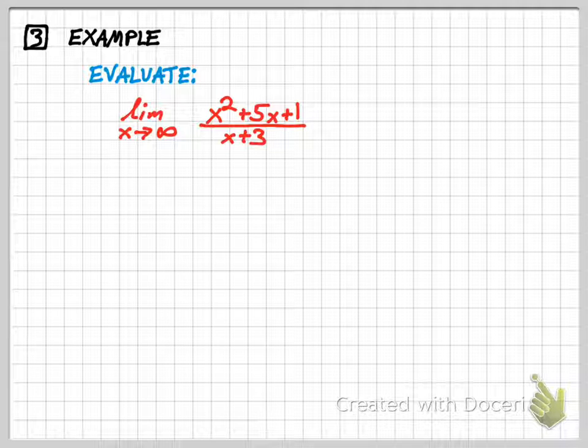Okay, one more to talk about. This is the top-heavy case. If you thought about plugging in numbers, they both, the numerator and the denominator both get big, but the numerator, because it's a higher power, gets much bigger and much faster.